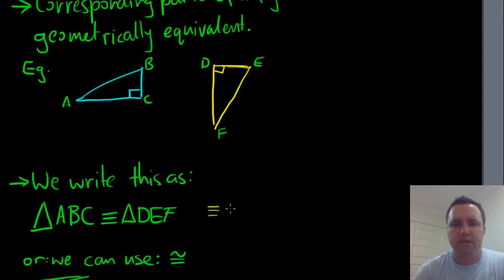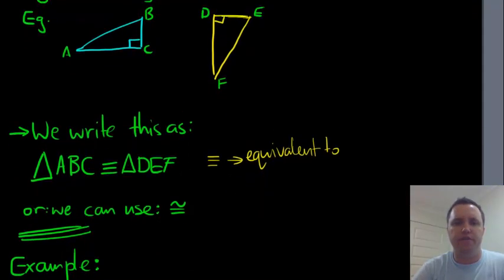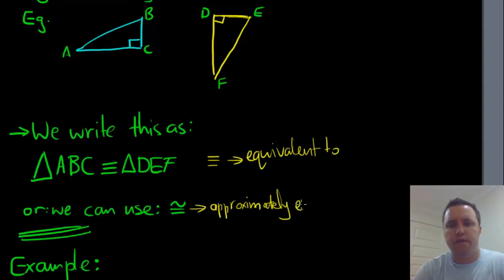So that's what that thing means. This means equivalent to. So the triangle ABC is equivalent to triangle DEF. Or we can use this one here. The squiggly line at the very top. So squiggly line, line, line. This means approximately equivalent to. So you don't need to perfectly remember what those definitions are, but you need to be familiar with seeing this and familiar with writing it.